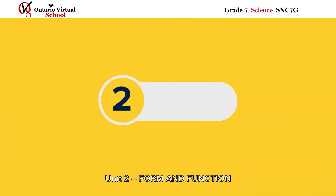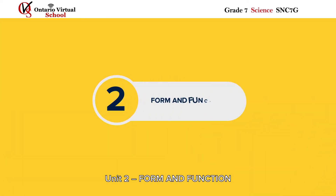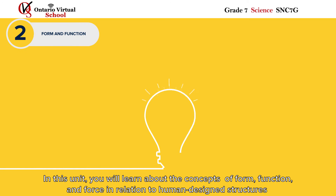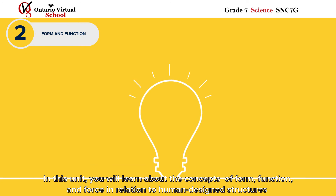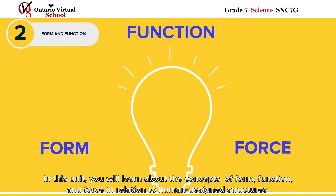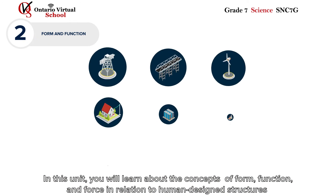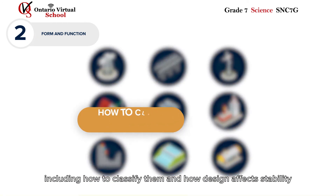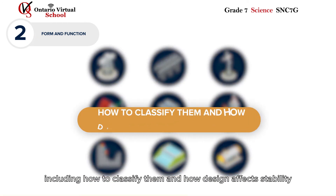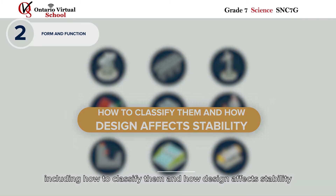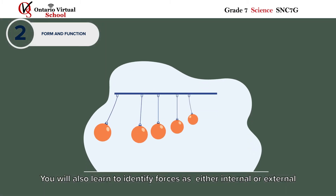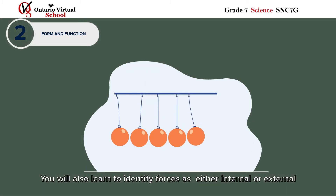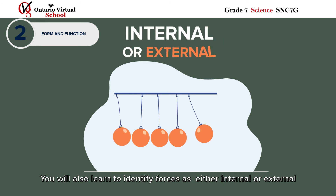Unit 2 – Form and Function. In this unit, you will learn about the concepts of form, function, and force in relation to human design structures, including how to classify them and how design affects stability. You will also learn to identify forces as either internal or external.